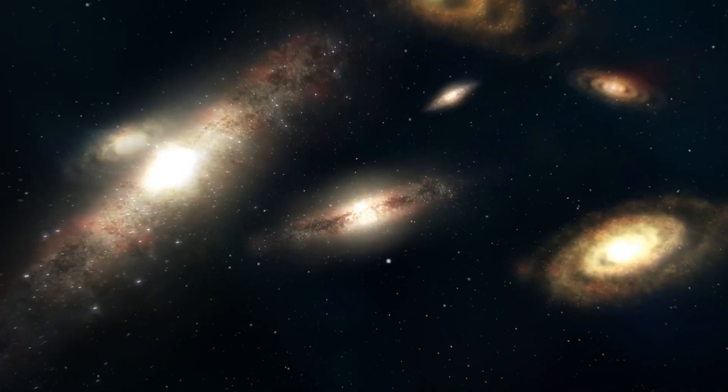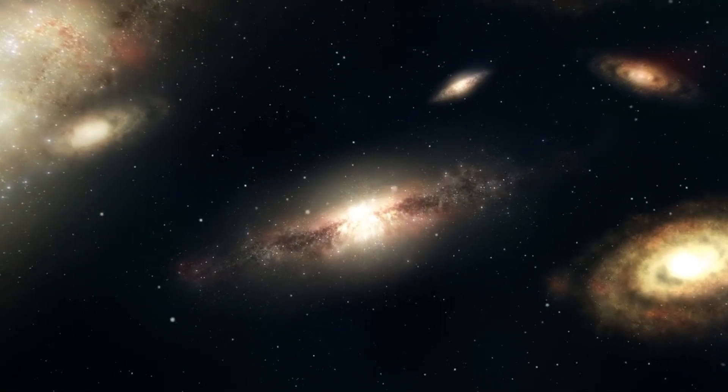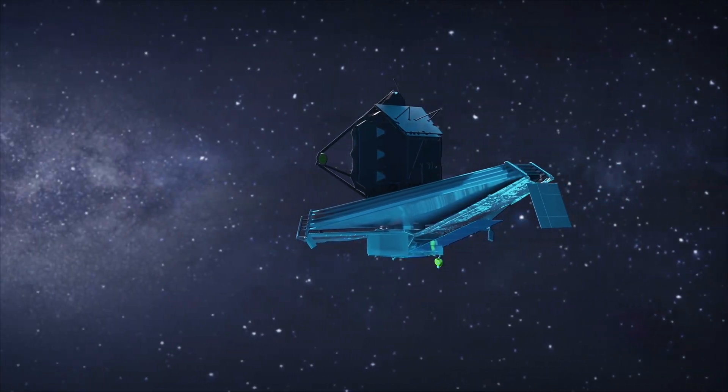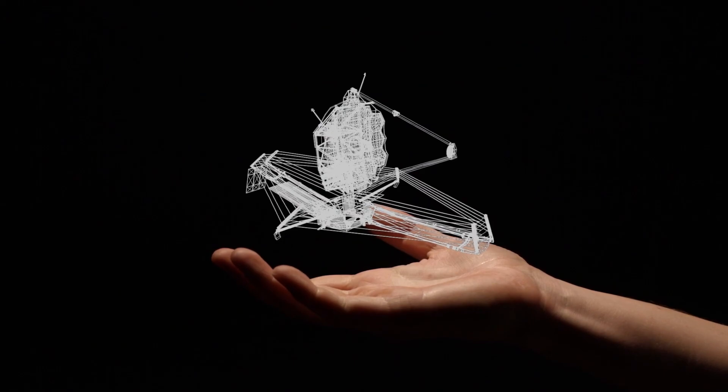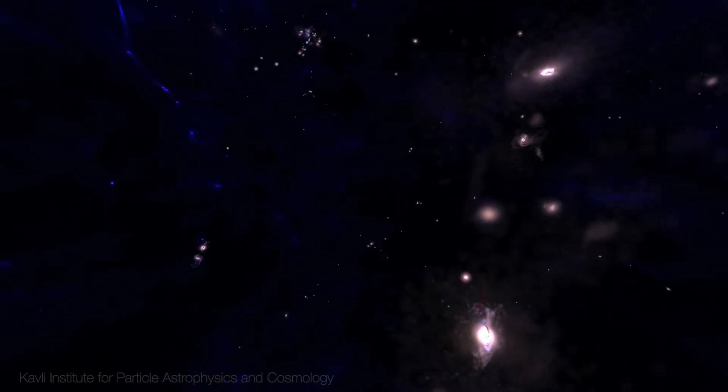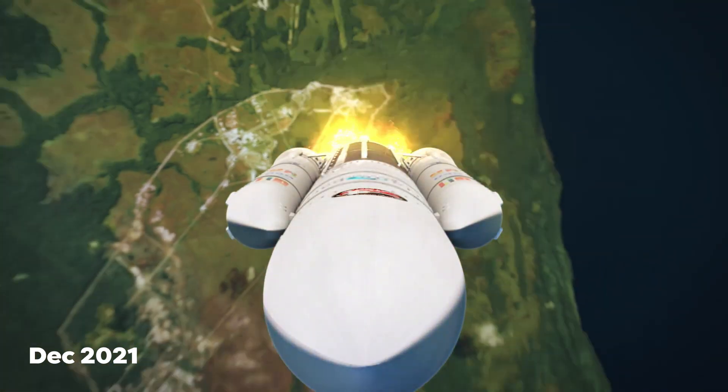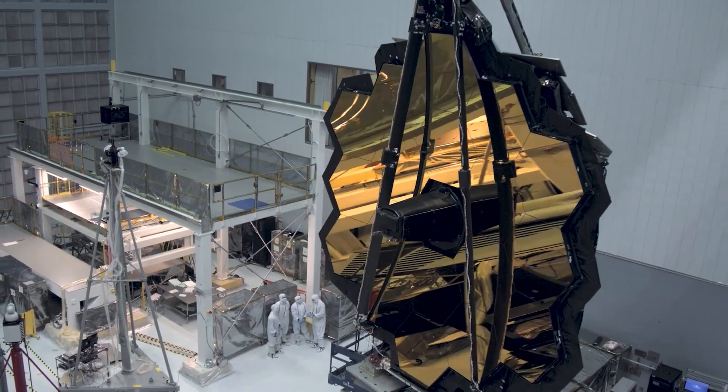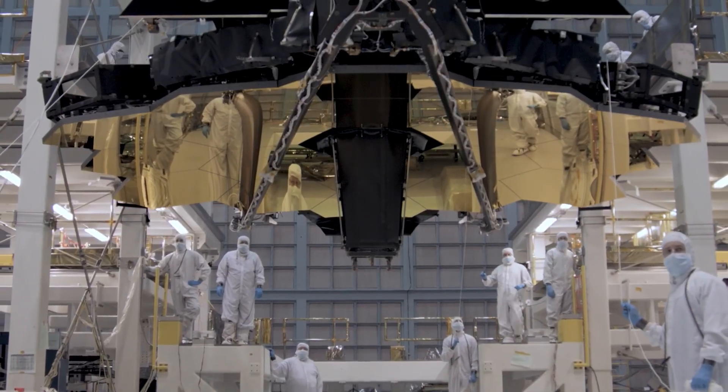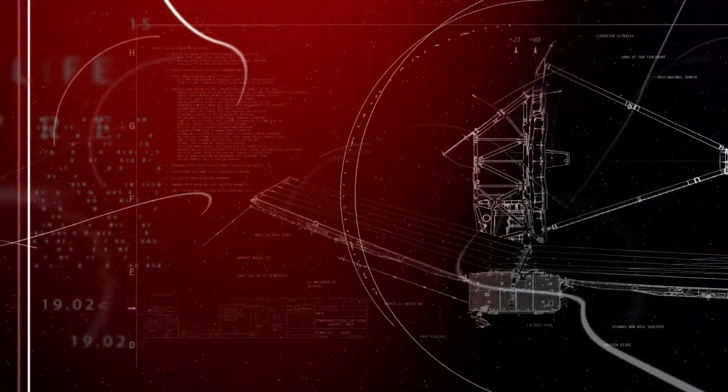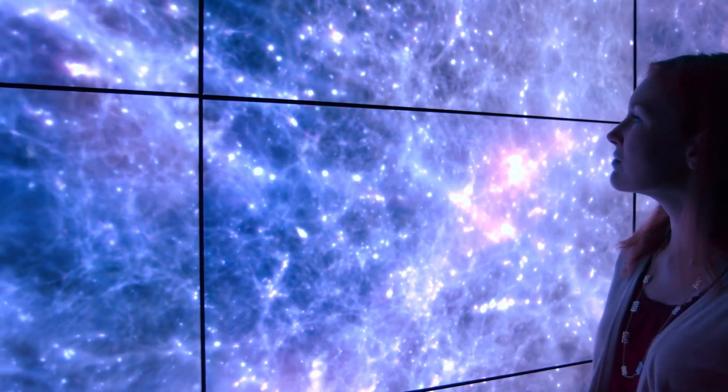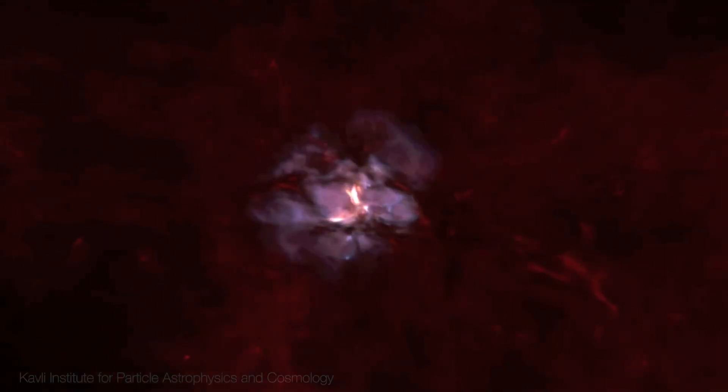As humanity's insatiable curiosity about the universe continues to drive technological advancements, the James Webb Space Telescope emerges as a beacon of scientific progress. With its cutting-edge instruments, the JWST has the potential to become the successor to the Hubble Space Telescope, allowing for even deeper cosmic exploration. Launched in December 2021, the JWST boasts an array of advanced instruments including the near-infrared spectrograph, the near-infrared camera, and the mid-infrared instrument. Unlike its predecessor, the JWST is optimized to observe the universe in the infrared spectrum. This crucial distinction allows the telescope to penetrate cosmic dust clouds, unveiling celestial phenomena that were previously hidden.